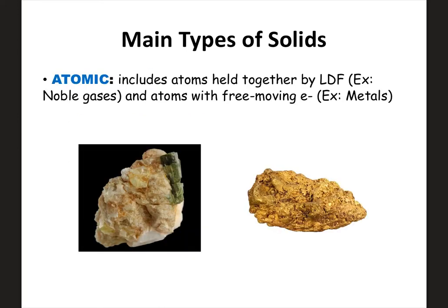We also have atomic solids. These are things that have London dispersion forces (LDFs) keeping them together. For example, some noble gases can form solids — they're not bonded to other atoms, just held together by LDFs. Metals are also atomic solids, since it's just the atom itself with free-floating valence electrons keeping them together. So if you have an element itself that is a solid, that would be an atomic solid.